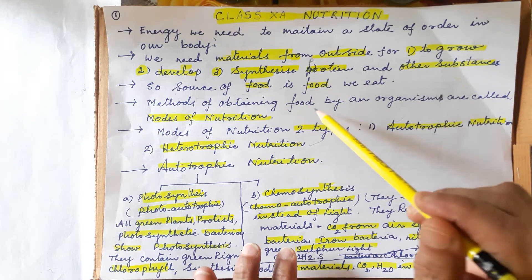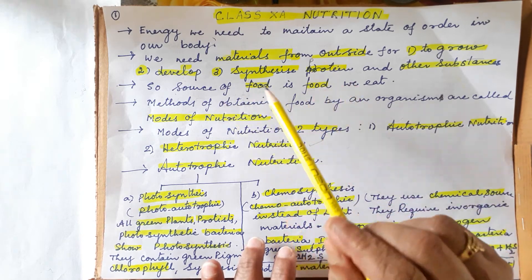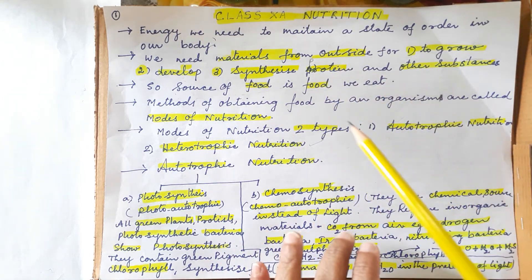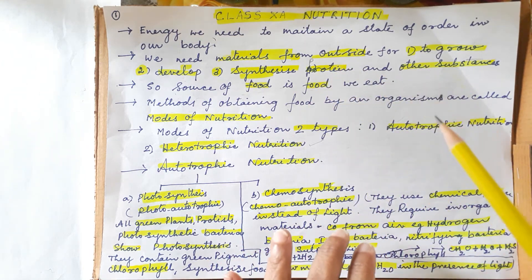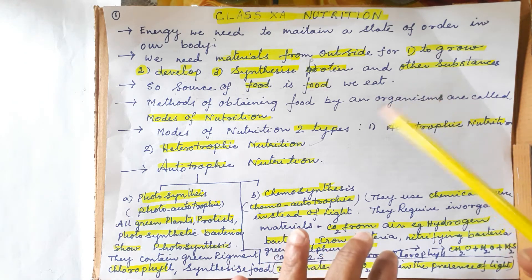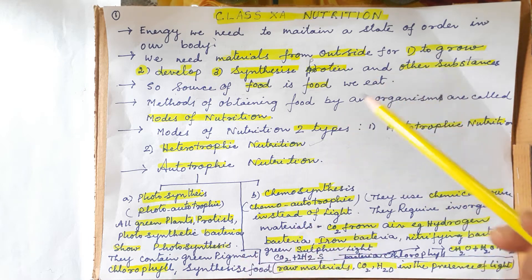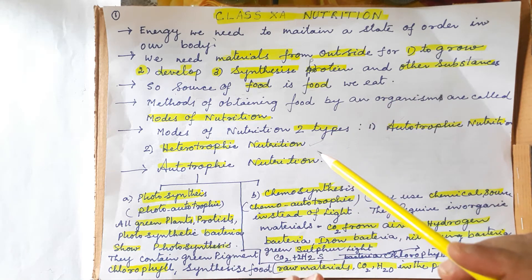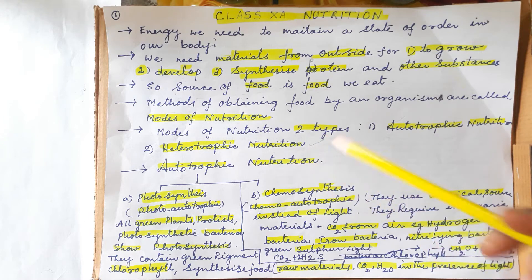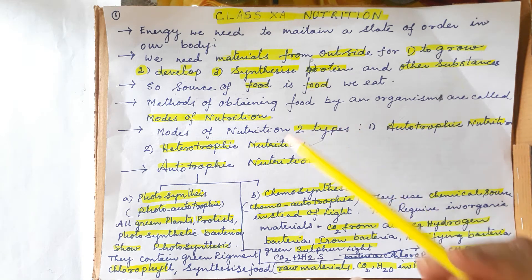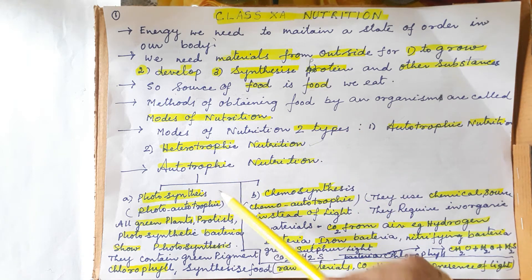The source of this energy is nothing but food — whatever food we are eating is the source of energy. Now the question is: what are the methods by which every organism gets their food? Whatever methods we use to get our food is called the modes of nutrition. The substances we take to get energy from outside is the nutrition. Modes of nutrition are of two types: heterotrophic nutrition and autotrophic nutrition.